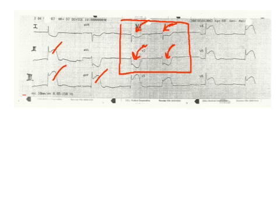To evaluate for a posterior wall MI, I would need to do a modified 12-lead, where I move some chest leads to the back of the chest underneath the scapula and run the 12-lead again. In this case, I did run a V4R — the patient had a right ventricular infarction. We ended up loading the patient with fluids, and I think he also received atropine for the bradycardia.